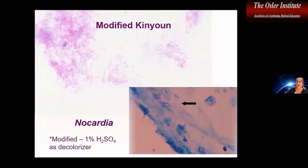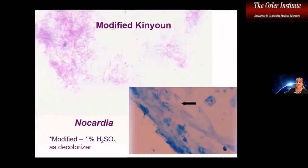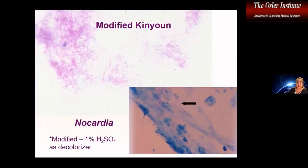You've hopefully already heard about the modified Kinyoun stain. This is most useful for things like Nocardia. The modification is that instead of using the 3% acid-alcohol decolorizer used for traditional mycobacteria, we use 1% sulfuric acid as the decolorizer.